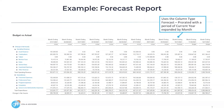Our third example is a forecast report. This report in the financial report writer is using the column type of Forecast Prorated with a period of the current year expanded by month. This is run mid-year, so you can see that the prior periods are all actuals, with the future periods being forecast and budget.